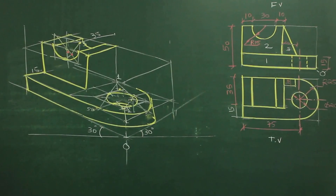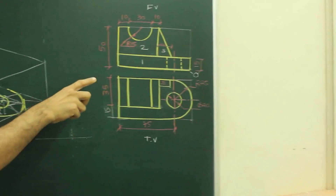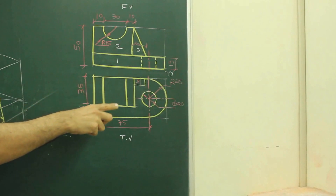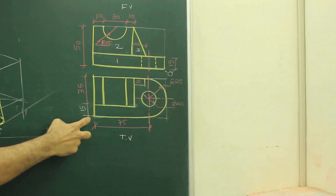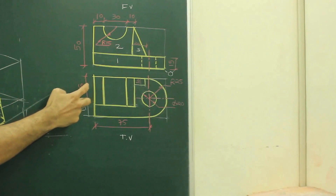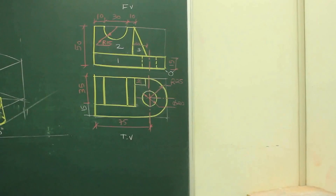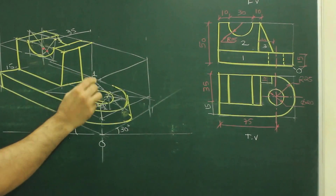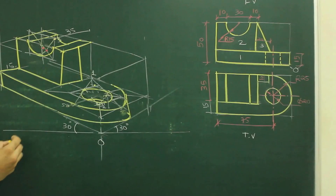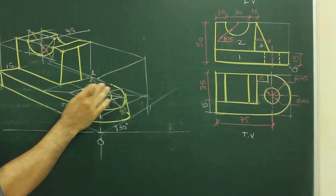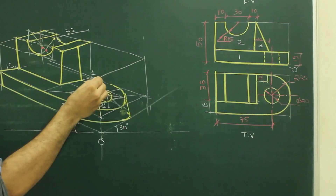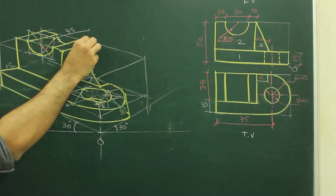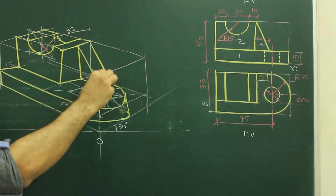Now after this, we will draw part 3. If you see part 3, how much is it behind? Total is 50, that is 10. So it is 40 behind. So we can say 15 and from here 25. So we'll go behind by 25 from here and draw a vertical line. In the front view, I've given 20. So I can draw 20 over here and join this. Then I'll go behind by 10 and join this. So we are done with part 3.